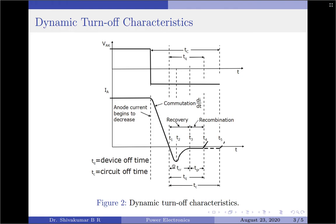The device turn-off time, represented by tq, is the sum of the reverse recovery time and the gate recombination time: tq = TRR + TGR. At the end of tq, a depletion layer develops across junction J2 and the thyristor recovers its ability to withstand the forward voltage — re-entering the forward blocking mode. To ensure the SCR has successfully turned off, the circuit turn-off time (tc) must be greater than the device turn-off time (tq).